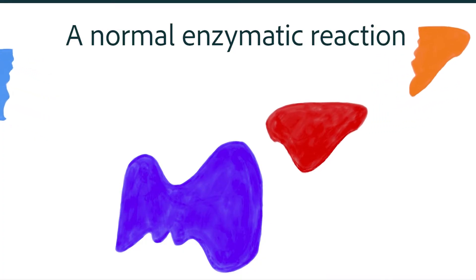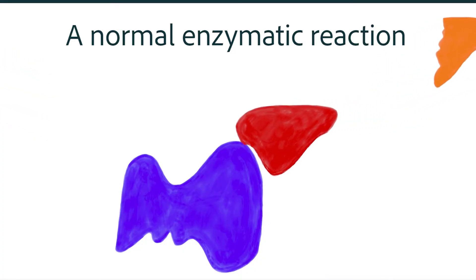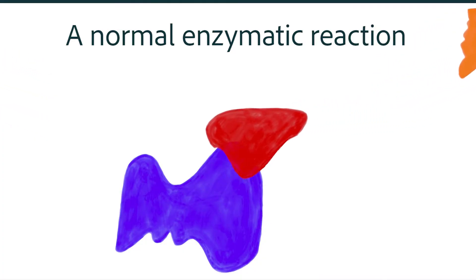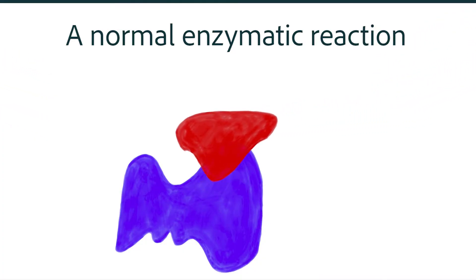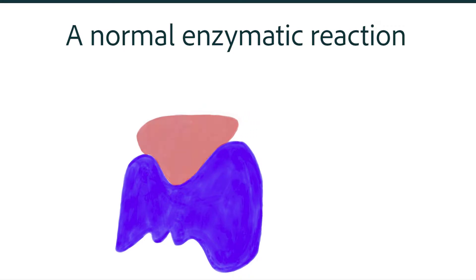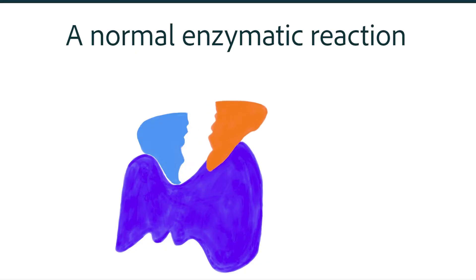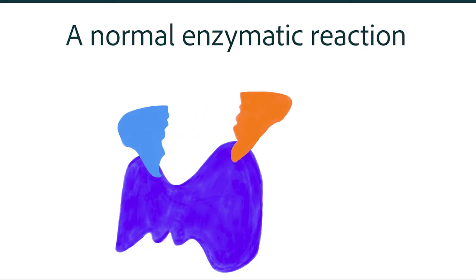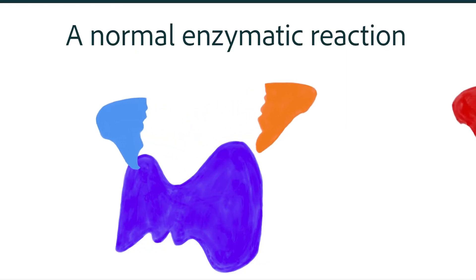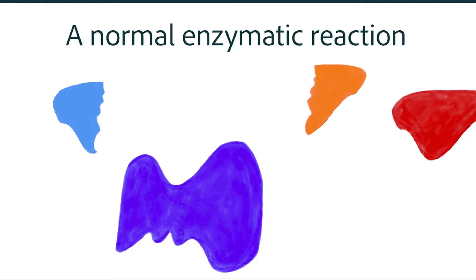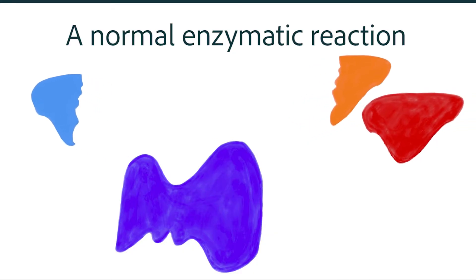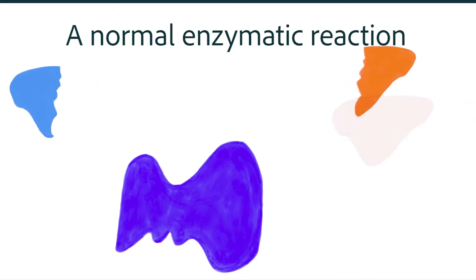Enzymes are really important to a range of biological processes. So given that, it's understandable why a lot of our medications work by inhibiting one of them. Let's try to understand the basics of enzymatic inhibition as it applies to our medications.